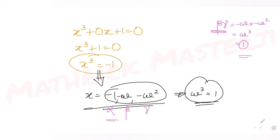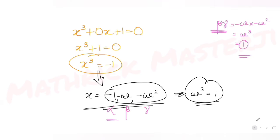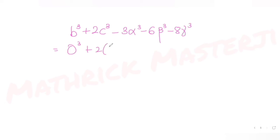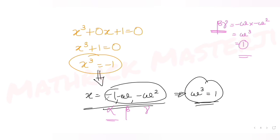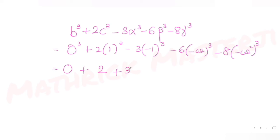Now I substitute into the expression: b cubed plus two c cubed minus three alpha cubed minus six beta cubed minus eight gamma cubed. With b equals zero and c equals one: zero cubed plus two times one cubed minus three times minus one cubed minus six times minus omega cubed minus eight times minus omega squared cubed. This gives zero plus two minus three times minus one minus six times minus omega cubed minus eight times minus omega to the sixth.